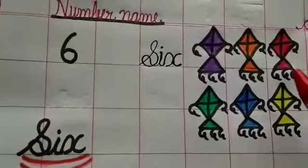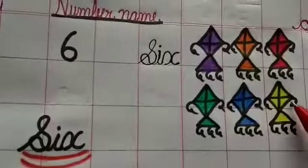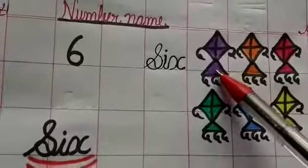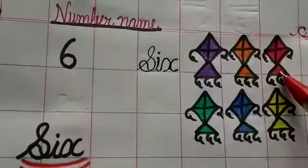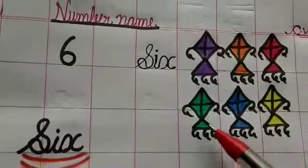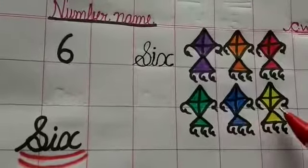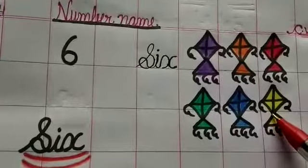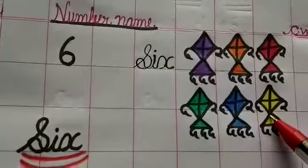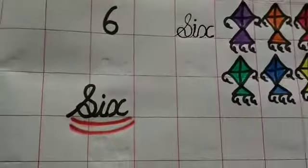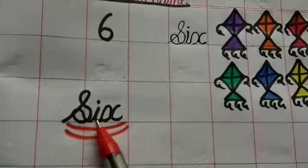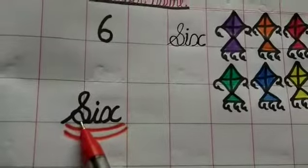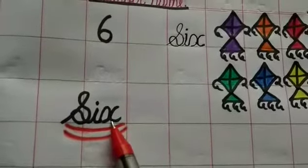Students, how many kites are there? How many? Count karo. 1, 2, 3, 4, 5, 6. 6 kites. How many kites are there? 6 kites. S-I-X. 6, S-I-X.